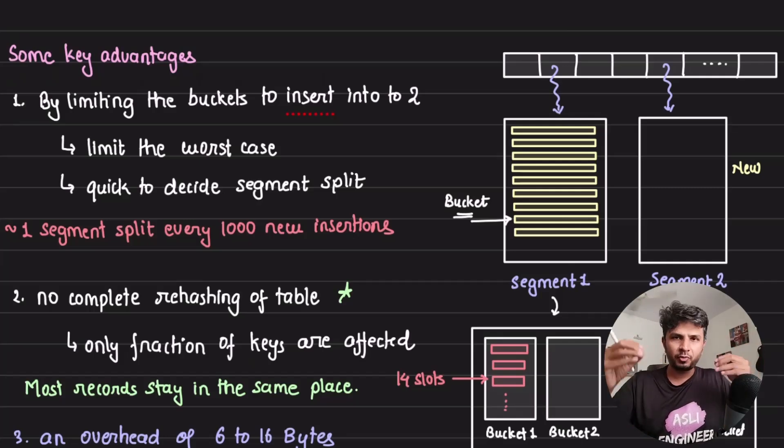On average, if you assume because each segment holds 840, it is a rough assumption that one segment split will happen every thousand new insertions, which is a fair assumption.